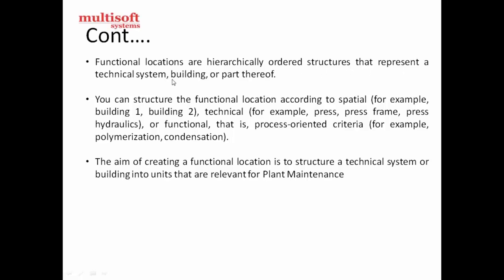Functional locations are hierarchical order structures that represent the technical system or building, or part thereof. For example, building one and building two — that's the spatial aspect, a space area. Technical refers to some of the machinery and equipment which is installed at the functional location.